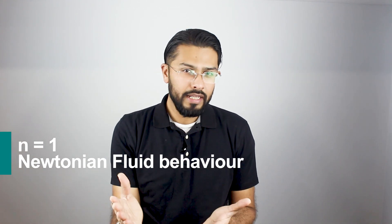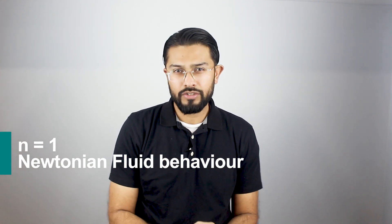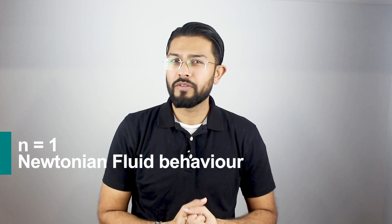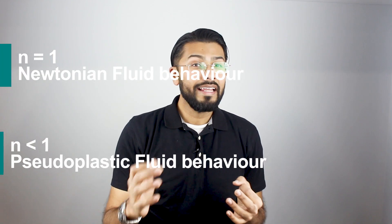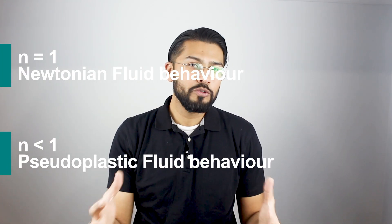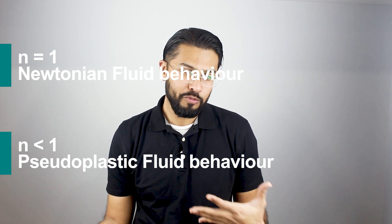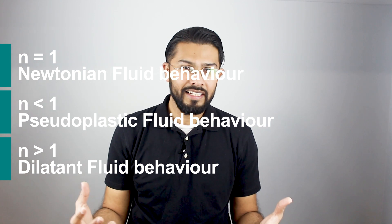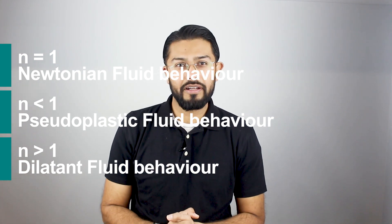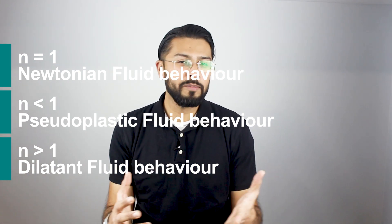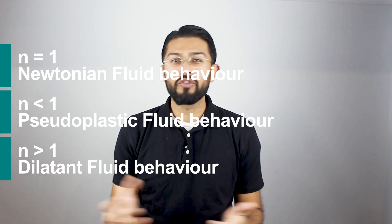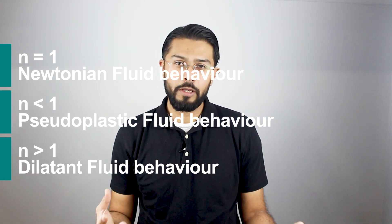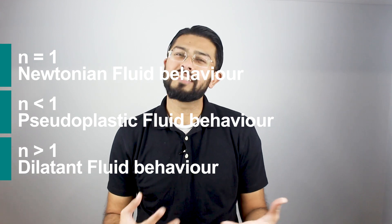When N equals 1 it's a Newtonian fluid — stress is directly proportional to the rate. When N is less than 1 you have pseudoplastic behavior — it gets easier to flow as you push harder. When N is greater than 1 it's dilatant — it gets thick under pressure. In dental materials you'll often encounter Newtonian and pseudoplastic behavior. Dilatancy is rare. Understanding these behaviors is crucial for easy handling.